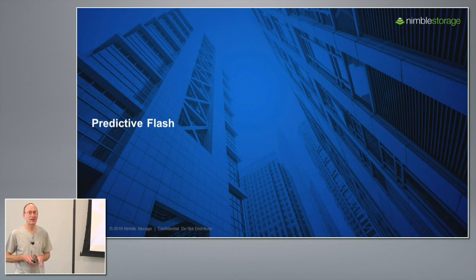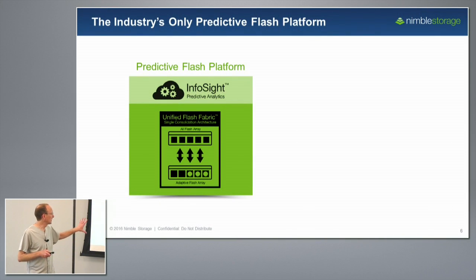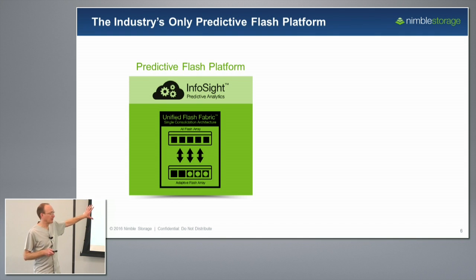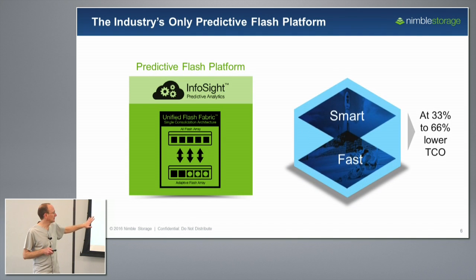I'm going to talk about predictive flash for a moment. On February 23rd, we announced our all-flash array, and we also announced what we call our predictive flash platform. The predictive flash platform is made up of two components: InfoSight, our predictive analytics, and what we call the unified flash fabric. You're going to hear a lot about InfoSight in the second half of this presentation, so I'll skip that entirely and talk in a moment about unified flash fabric.